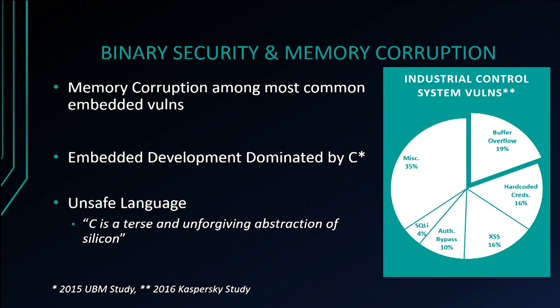What's embedded binary security all about? Binary security is about memory corruption, and memory corruption ranks among the most common embedded vulnerabilities. As shown in the pie chart on the slide by Kaspersky, industrial control systems — which are relatively representative of embedded systems in general — show buffer overflows as the biggest single category of vulnerabilities. This is largely due to embedded development being dominated by C, which is an unsafe language. As someone once said, C is a terse and unforgiving abstraction of silicon, making it easy for developers to introduce such vulnerabilities.